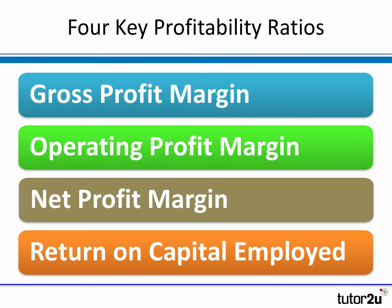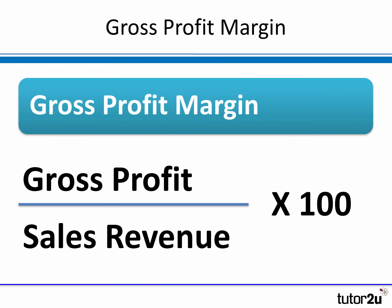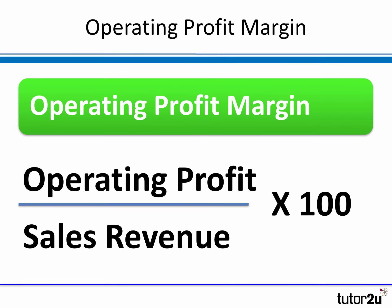So let's quickly go through the four key profitability ratios — what they are and how they're calculated. Gross profit margin is the first one. It's the gross profit — which is sales less cost of sales — divided by the total sales revenue of the business, multiplied by 100 to get a percentage. Moving down the income statement, we get to operating profit, which is gross profit minus the overheads of the business. The operating profit margin is expressed as a percentage of sales revenue — we take the operating profit from the income statement, divide it by sales revenue, and multiply by 100.